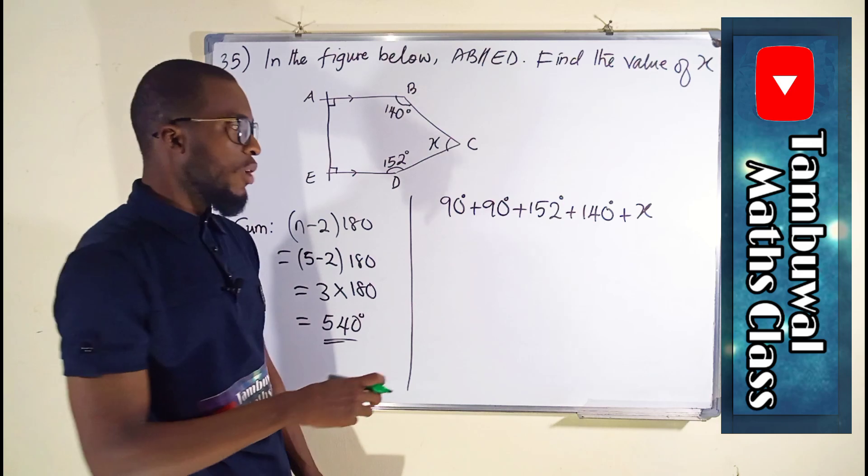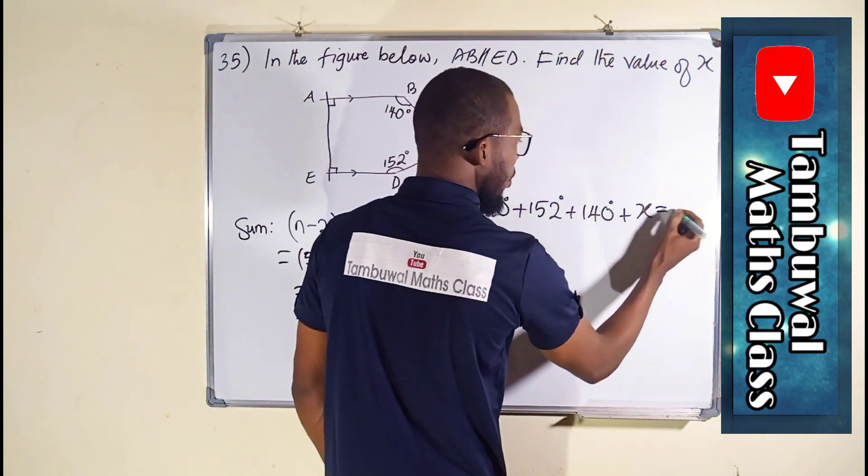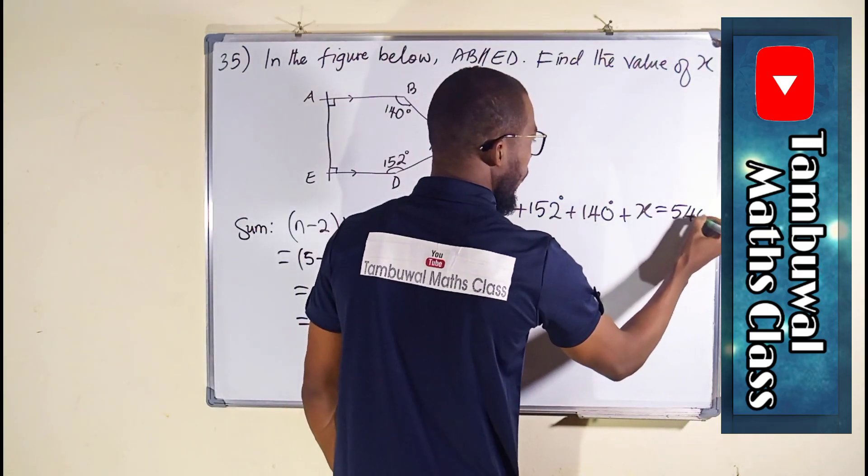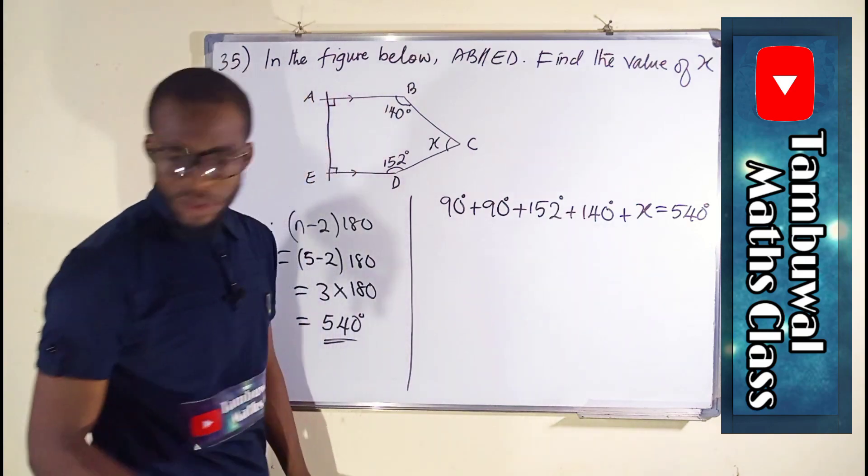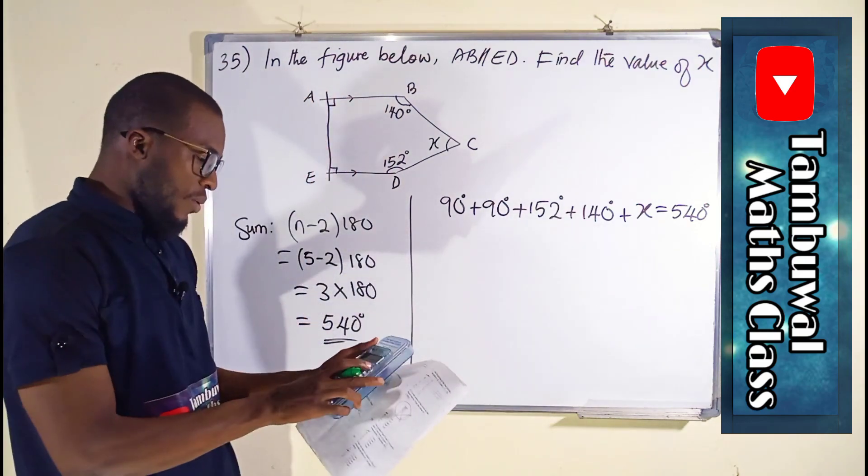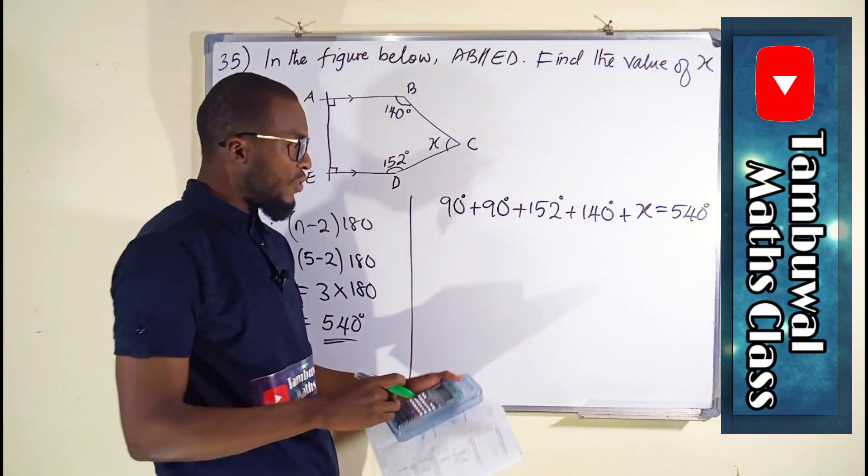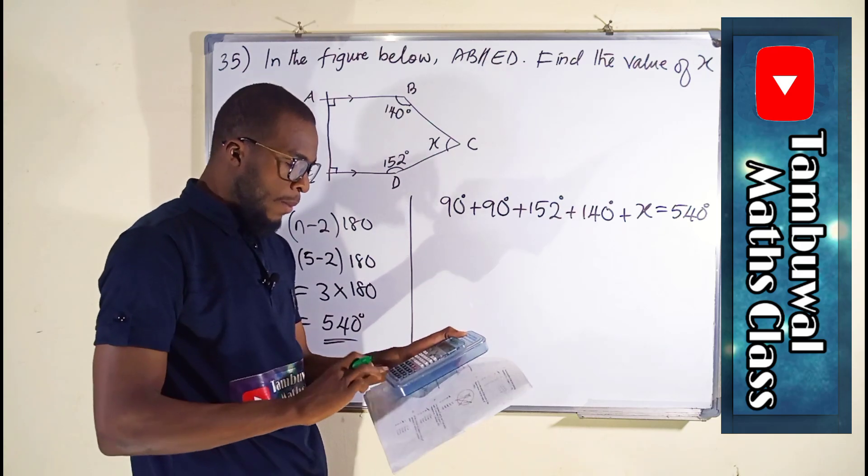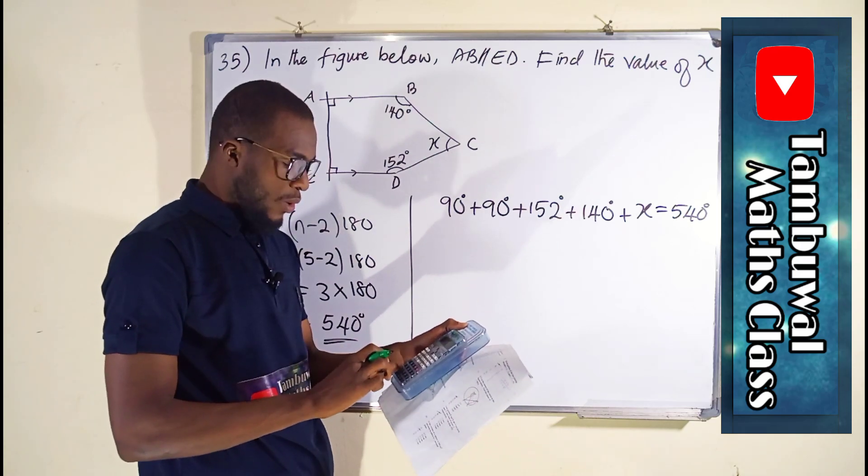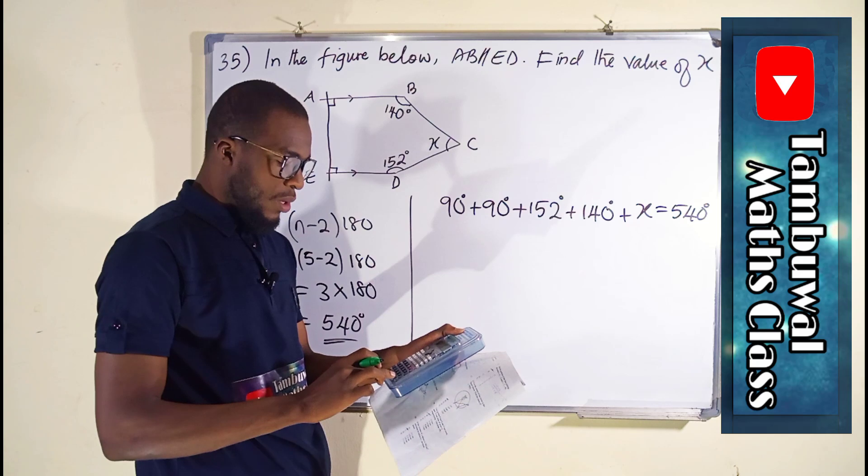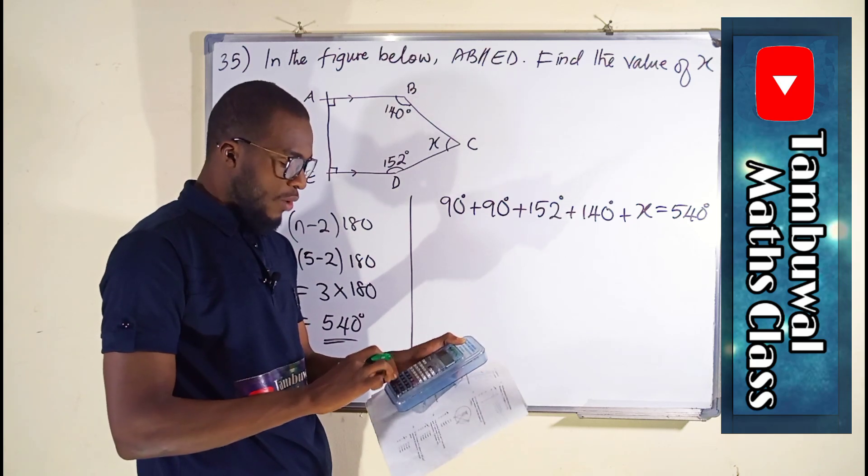Let us first of all add all of this together before we equate them to 540 degrees. We have 90 plus 90, which is 180, and 180 plus 152 plus also 140.